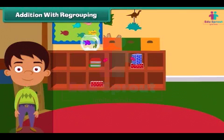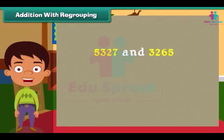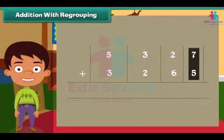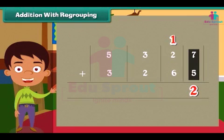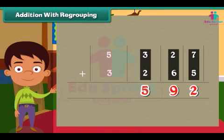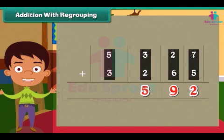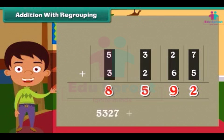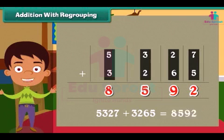Addition with regrouping. Let's try the addition of 5327 and 3265. We start by adding values at the ones place: 7 plus 5 is equal to 12. Write 2 below in the ones column and carry 1 above to the tens column. Next we add the tens: 2 plus 6 plus 1 is equal to 9. Write 9 in the tens column. Now add hundreds: 3 plus 2 is 5. Similarly, add thousands to get 8. Therefore, 5327 plus 3265 is equal to 8592.